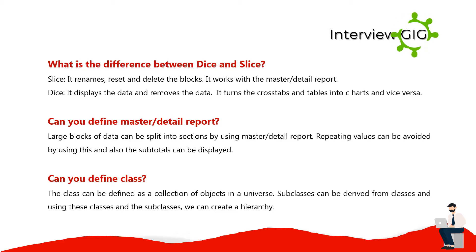What is the difference between dice and slice? Slice renames, resets, and deletes the blocks — it works with the master detail report. Dice displays and removes the data and turns cross tabs and tables into charts and vice versa. Can you define master detail report? Large blocks of data can be split into sections by using master detail report. Repeating values can be avoided using this, and subtotals can also be displayed. Can you define class? A class can be defined as a collection of objects in a universe. Subclasses can be derived from classes, and using classes and subclasses we can create a hierarchy.